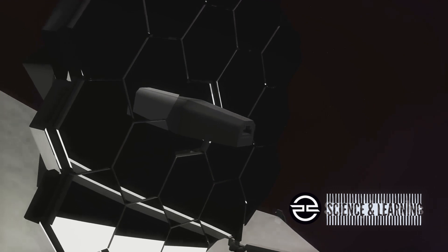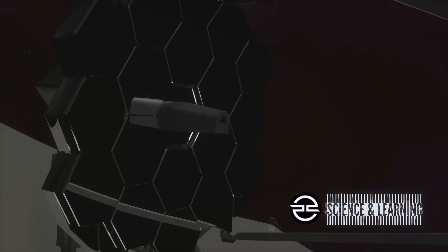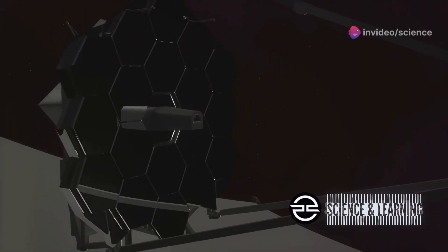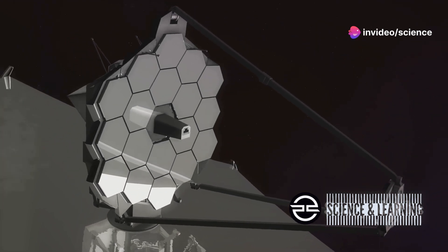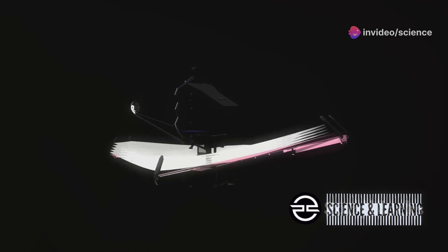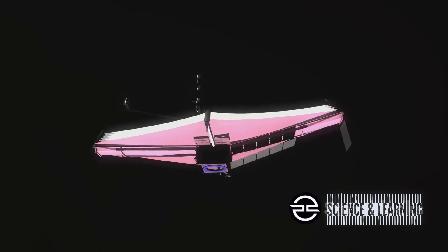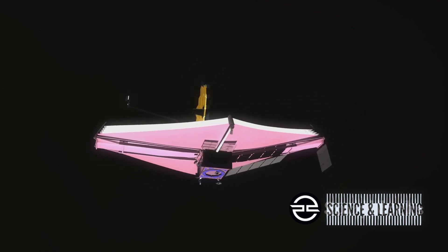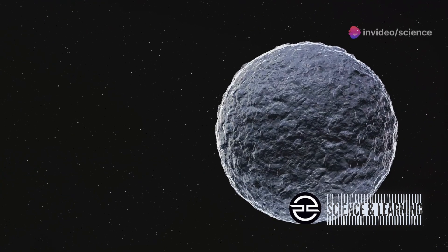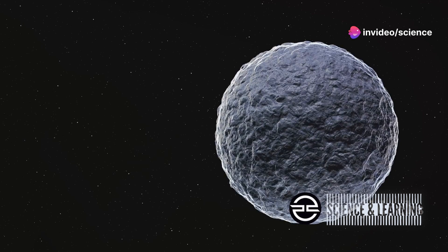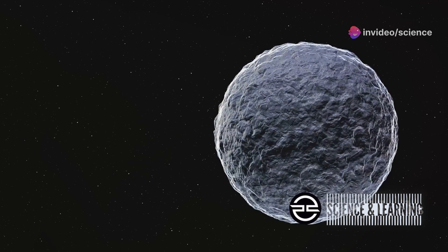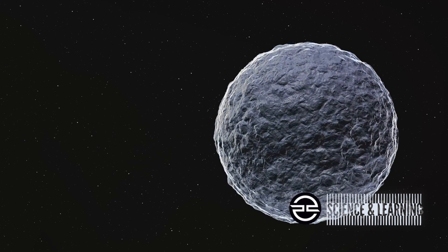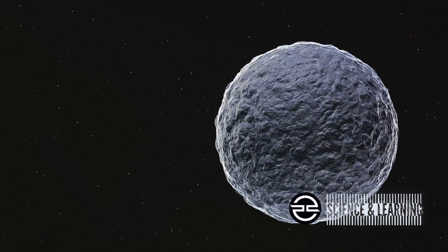These features collectively make the James Webb Space Telescope an exceptional tool for probing the depths of the cosmos, exploring phenomena that were once beyond our reach. With this incredible technology, the JWST recently made a groundbreaking discovery on a planet known as the Hell Planet. What could possibly earn a planet the daunting nickname Hell Planet? Let's dive into the bizarre world of K2-141b, a world where the word extreme takes on a whole new meaning.